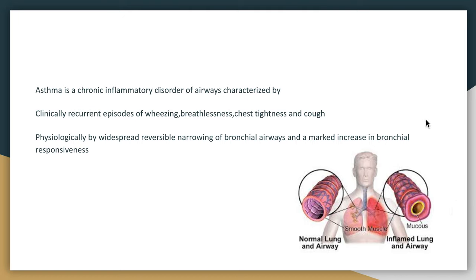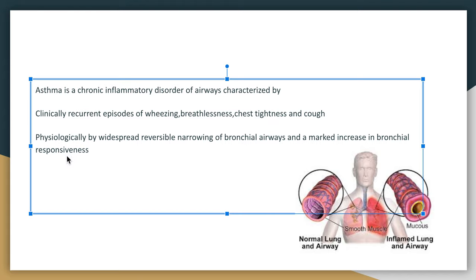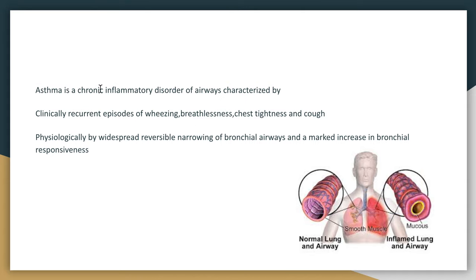The increased bronchial responsiveness is triggered by certain factors such as dust, allergens, cold air, infection, and certain drugs. The basic underlying pathology of asthma is inflammation. There is degranulation of the mast cells, release of stored inflammatory mediators, and also increased production of the mediators of inflammation.